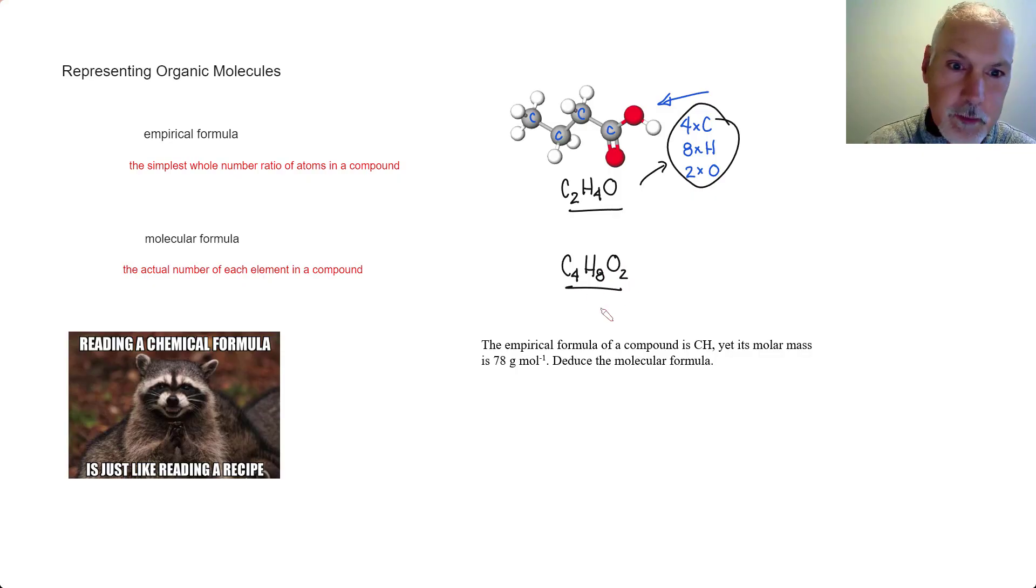Now the empirical formula is obtained experimentally, often by something like a carbon analysis that would give us the percentage composition of a compound, and from that we could then determine the whole number ratio. In order to move from this formula to this formula, we usually need one other piece of information. That information is typically something like the molar mass.